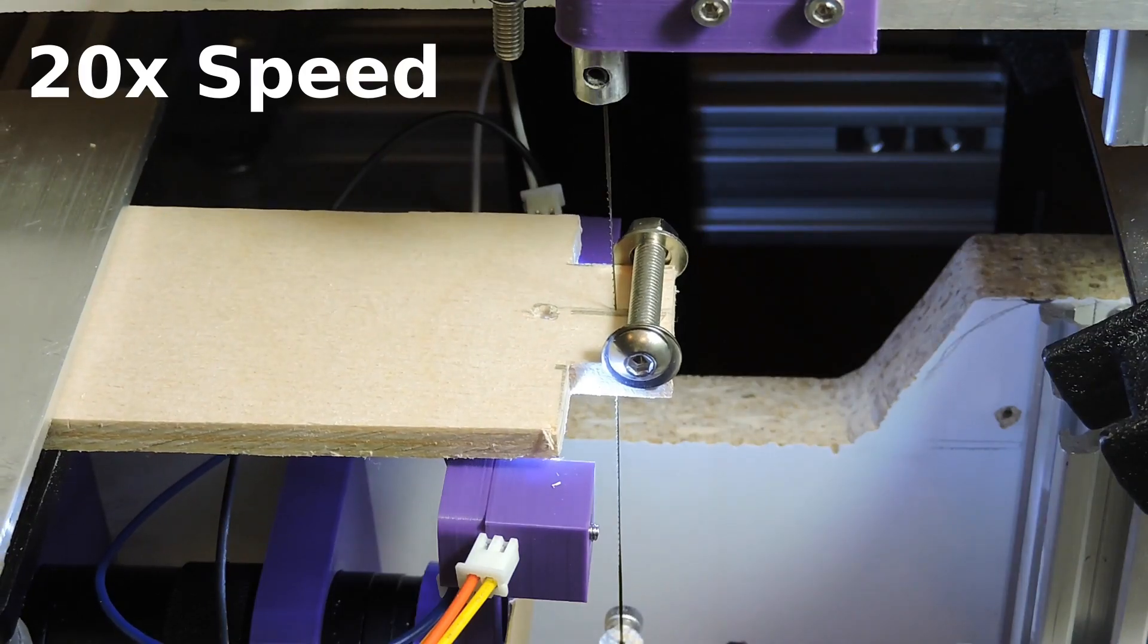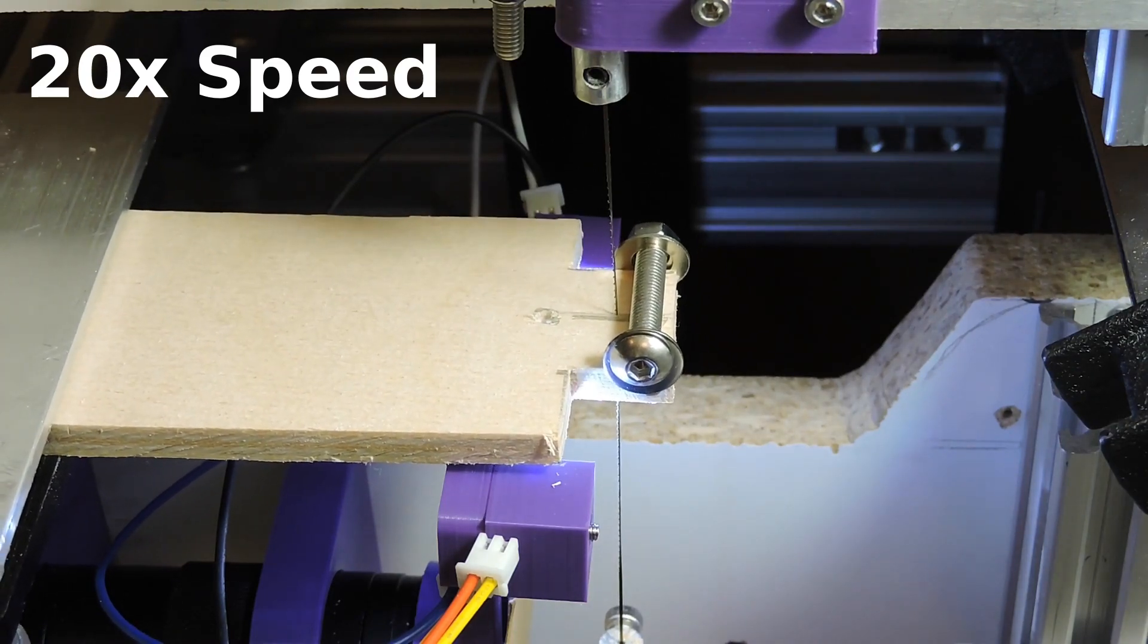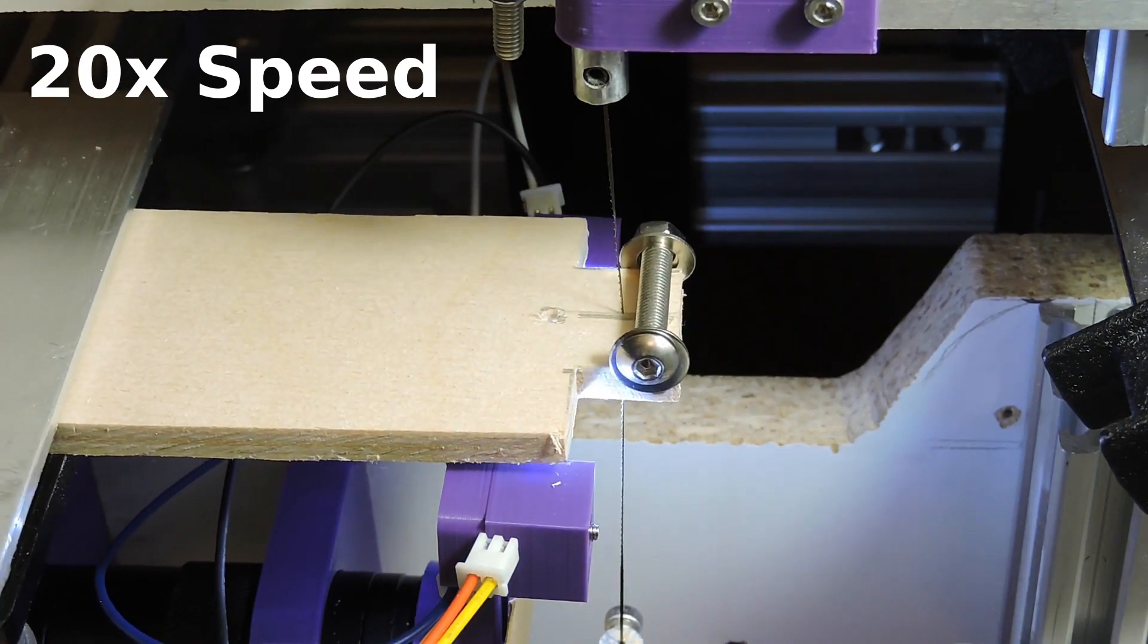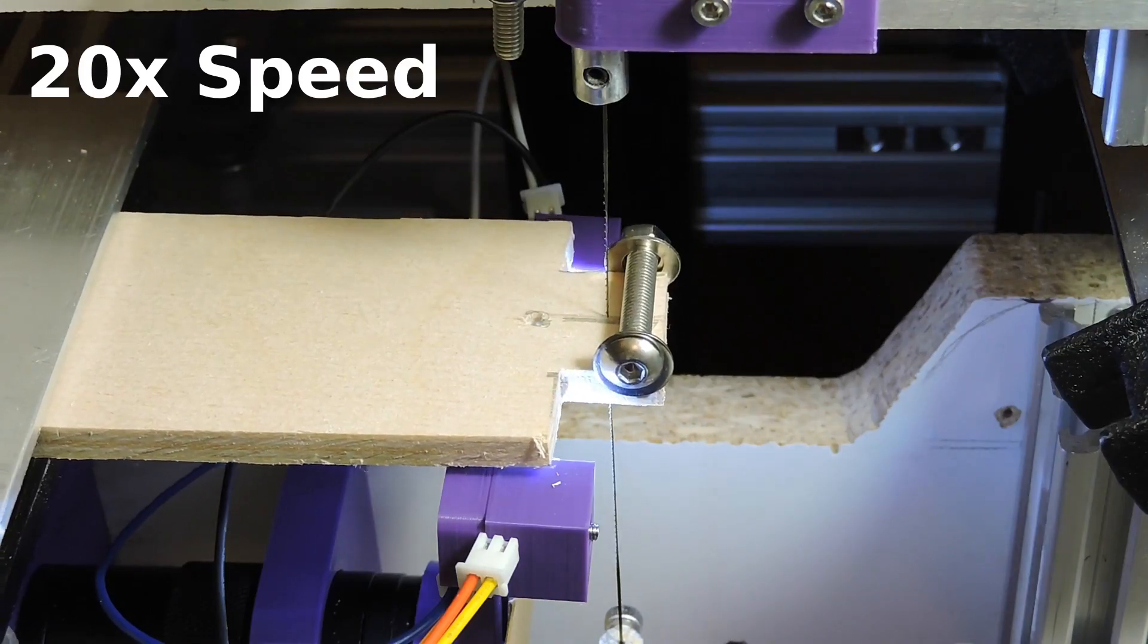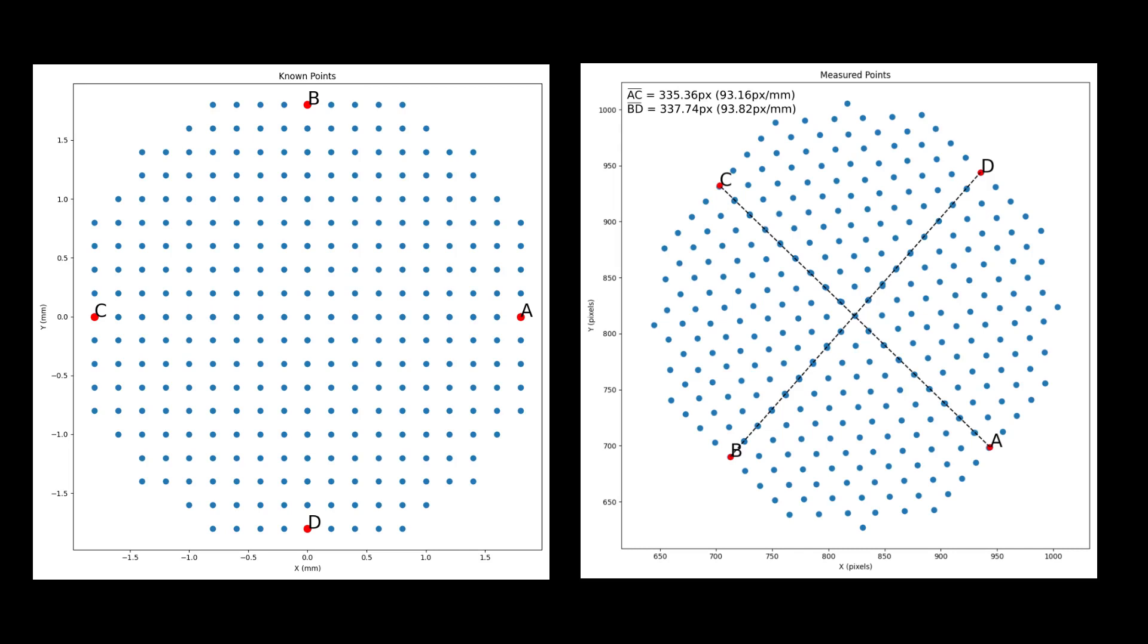Then, to calibrate the system, I clamp the blade to the xy axes and move through a series of grid points, capturing an image at each location. These are the known points in millimeters, and then compared with the measured points in pixels. You can see that points ABCD are both rotated and flipped in the right image, which is expected.